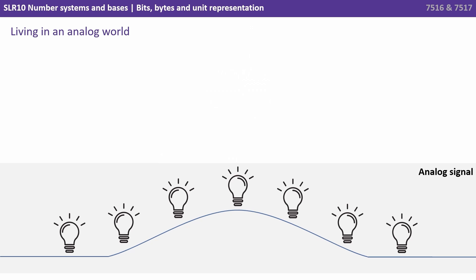We live in an analogue world, and by that we mean that everything is represented by sinuous waves that progress slowly from one state to another. Imagine turning on a light bulb. Although it may look instantaneous as we turn the light bulb on and off, the light would actually gradually get brighter and then gradually dim as we turned it off, and this would be represented by this curved wave.